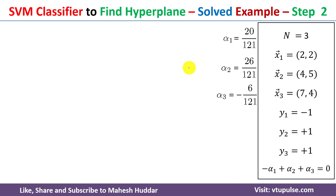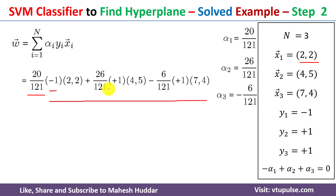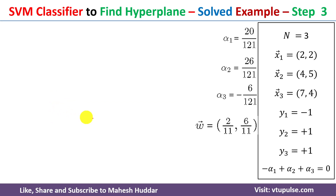After step one we have α1 = 20/121, α2 = 26/121, α3 = −6/121. Next we calculate the weight vector using w = Σαᵢyᵢxᵢ, expanding to α1·y1·x1 + α2·y2·x2 + α3·y3·x3. Substituting: (20/121)(−1)(2,2) + (26/121)(+1)(4,5) + (−6/121)(+1)(7,4). Simplifying this gives the weight vector w = (2/11, 6/11).